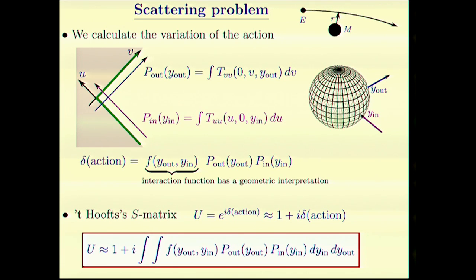There are two functions. One operator is p_in that depends on the point on the horizon. This is another operator. The variation of the action is some interaction function times the outgoing radiation times the incoming radiation. This interaction function is actually pretty fundamental. It has a deep geometrical interpretation and characterizes the space near the horizon.